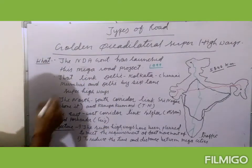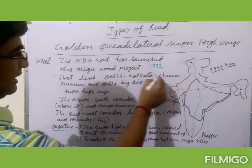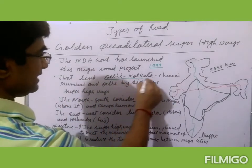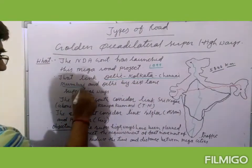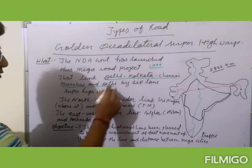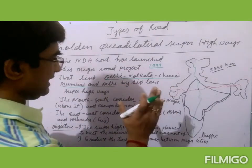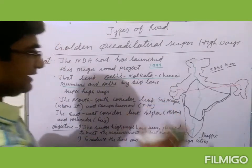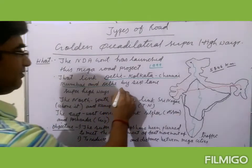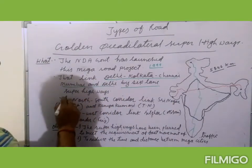It links Delhi, Kolkata, Chennai, and Mumbai — these are the four mega cities of India that are connected under this mega project, where six-lane super highways were made.